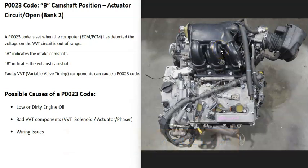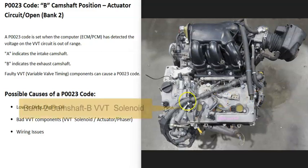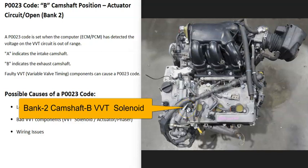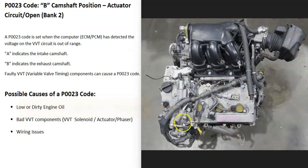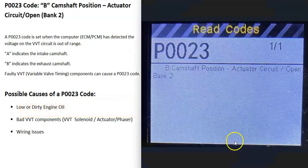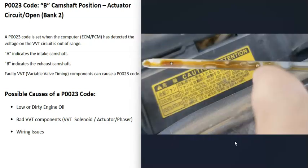Here's another example: a 2015 Toyota Highlander engine. This engine sits sideways, so bank one is up against the firewall and bank two is right up front. This right here is a variable valve timing solenoid that controls oil flow going to the actuator. This is the intake solenoid and this is the exhaust solenoid.